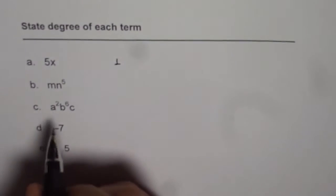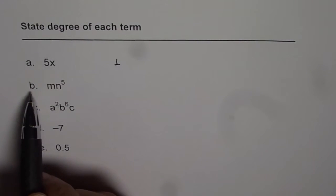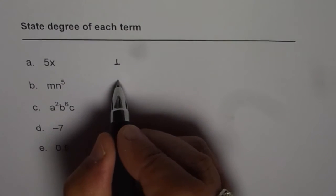In this particular case 5x, x to the power of 1, so the degree here is 1. In this case, there are 2 variables here, degree of m is 1, degree of n is 5. When we multiply, we add them up. And therefore, degree of part b is 6, 5 plus 1.